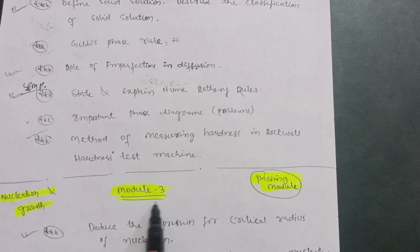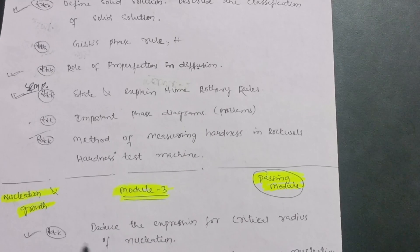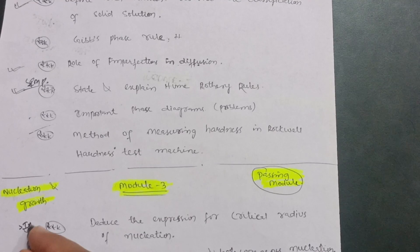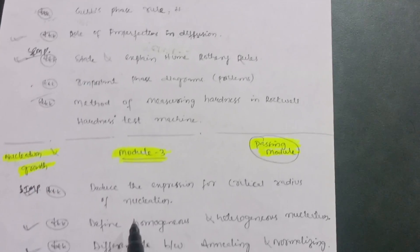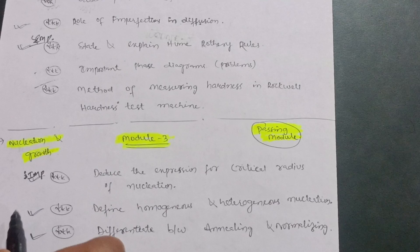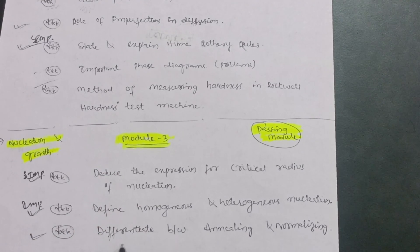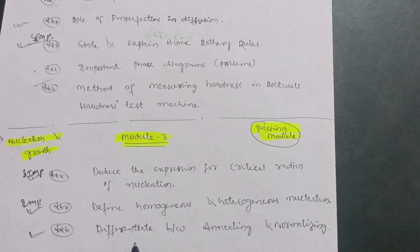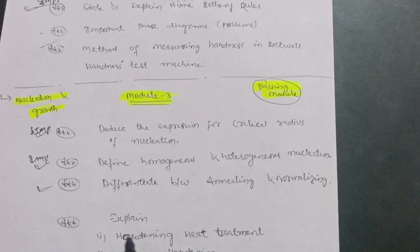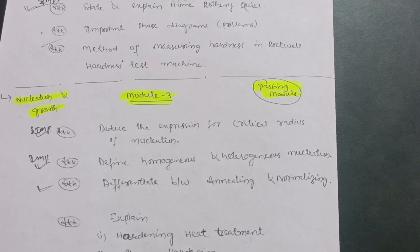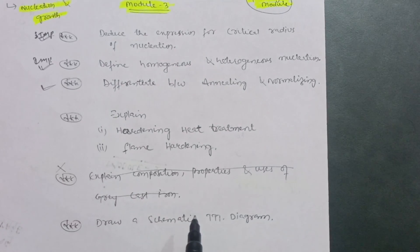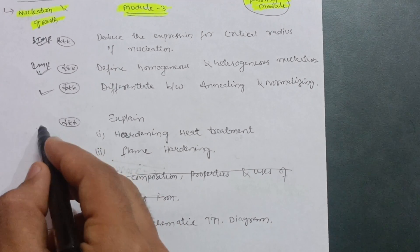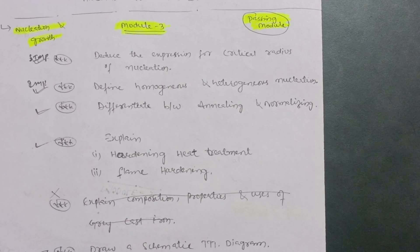Module 3, which is also a passing module, is Nucleation and Growth. Deduce the expression for critical radius of nucleation — most important. Define homogeneous and heterogeneous nucleation — also important. Differentiate between annealing and normalizing — a most important question. Explain hardening heat treatment, flame hardening, and draw the systematic TTT (Time-Temperature-Transformation) diagram — this is a most important one.